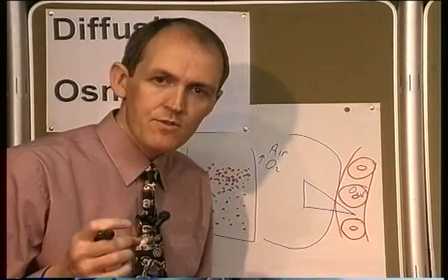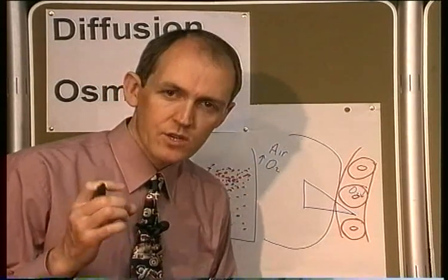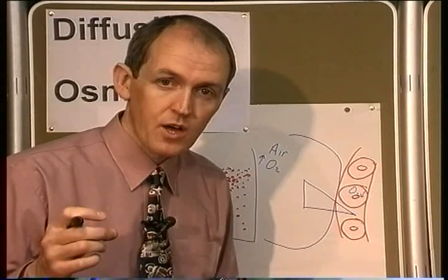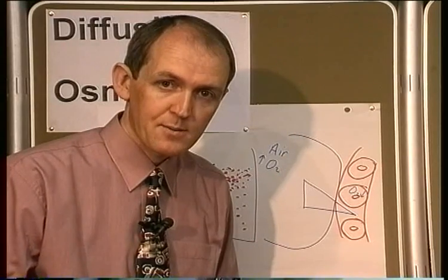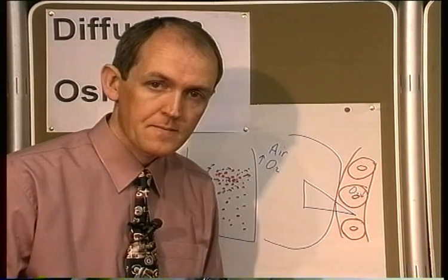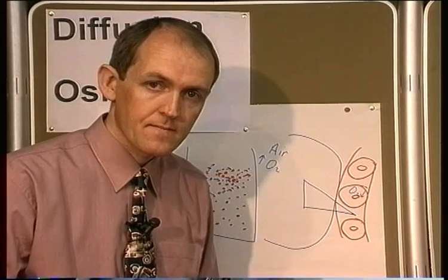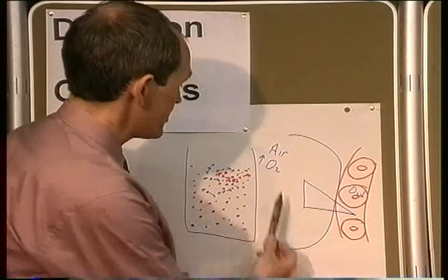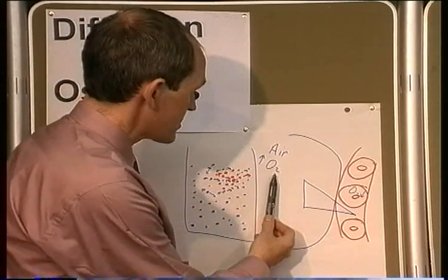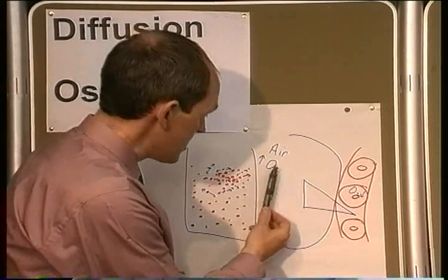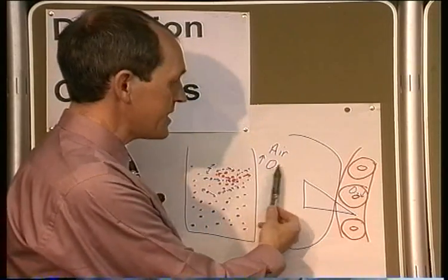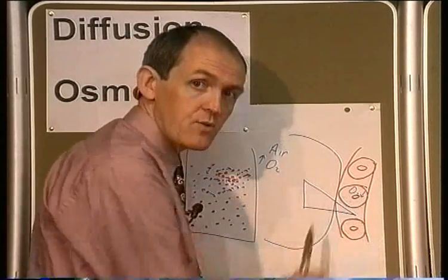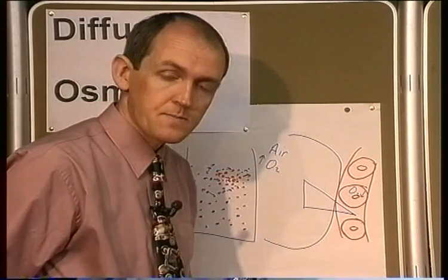Remember, the ink moved from areas where there was a lot of red ink to areas where there was not much red ink. So the oxygen in this case will want to move from where there's a lot of oxygen in the alveoli to where there's not much in the capillary, to try and make the concentrations equal on both sides.